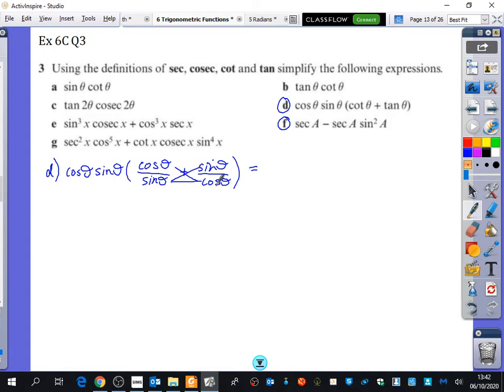So you get cos squared theta plus sine squared theta on the top. So we still have the cos theta sine theta from before. And the denominator is sine theta cos theta. Whoops.